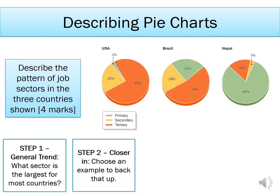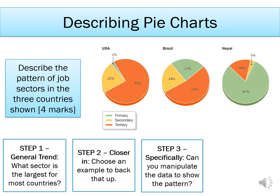Your C is for closer in — you then need to look closer and choose an example that backs up what you've just said for your general trend. So you might look at the USA and say their biggest sector is tertiary with 75% of jobs. Your S is for specifically — this is where you need to use specific data from your figure in your answer, and what looks even better than just using the data you've been given is actually manipulating it by doing a calculation to show that you understand what the numbers are saying.